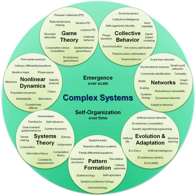The term 'complex systems' often refers to the study of complex systems, which is an approach to science that investigates how relationships between a system's parts give rise to its collective behaviors and how the system interacts and forms relationships with its environment. The study of complex systems regards collective, or system-wide, behaviors as the fundamental object of study. For this reason, complex systems can be understood as an alternative paradigm to reductionism, which attempts to explain systems in terms of their constituent parts and the individual interactions between them.